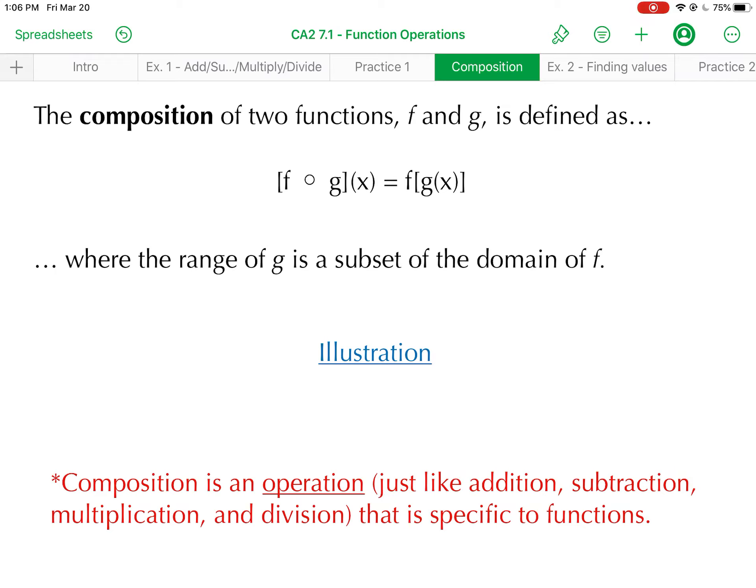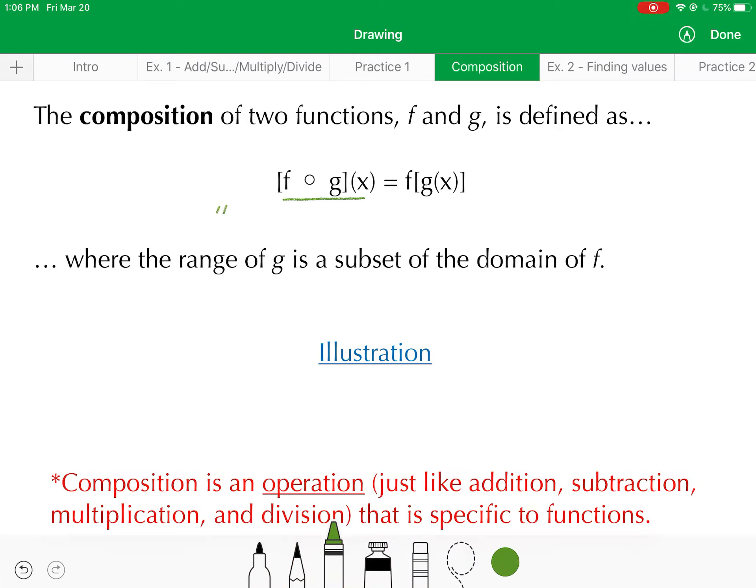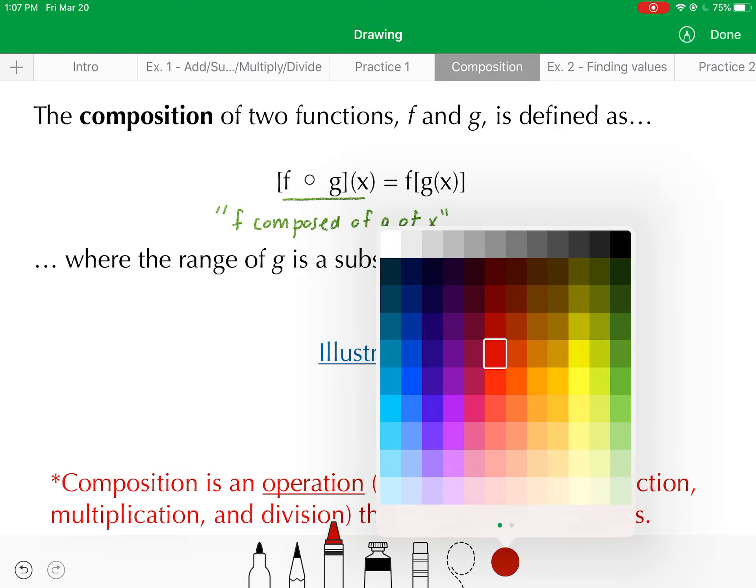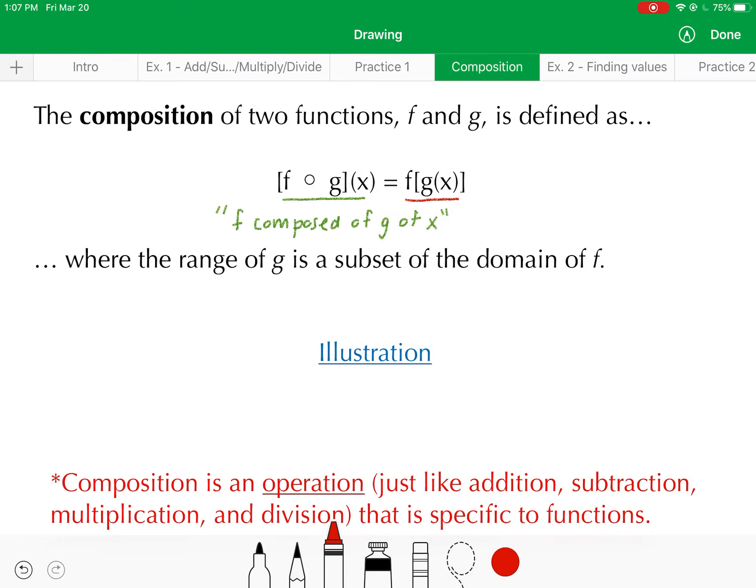The composition of two functions, f and g, is defined to be f composed of g of x. That's what this notation would be read as: f composed of g of x. Or that is no different than saying f of g of x when it's written in this other notation.